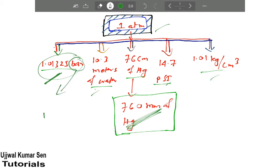You know that one bar is equal to 10 to the power 5 pascal. And what is the meaning of pascal? Newton per meter square. I think you know what is newton and meter square, don't need to elaborate.